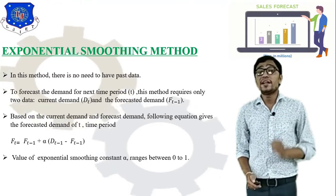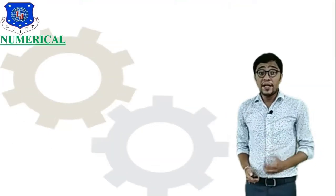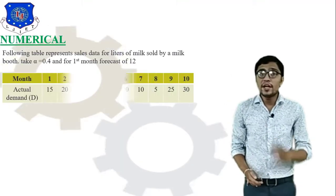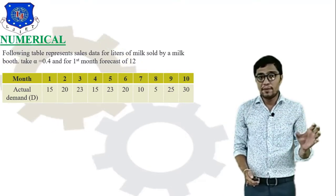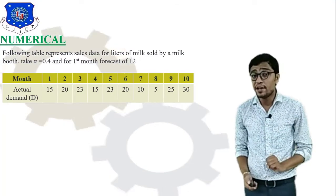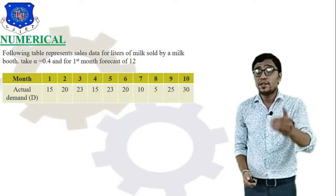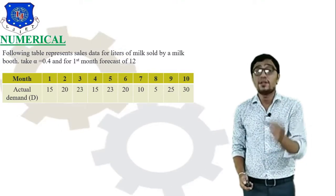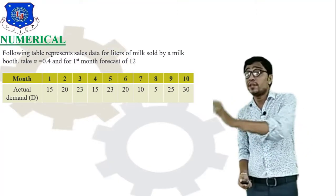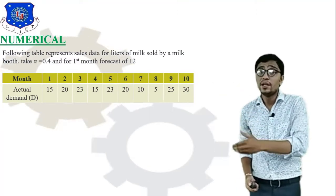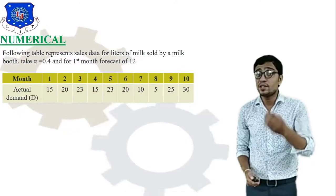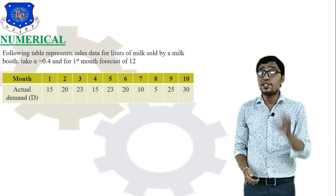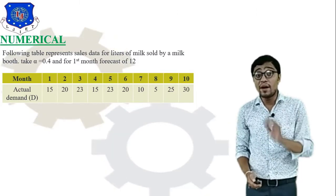Now we will look at a numerical example on the exponential smoothing method. You are given a table with 10 different months and the actual demand for each month. For example, the first month actual demand is 15, the second month is 20, and up to the 10th month the actual demand is 30. You are also given the first month forecast, F1, which is 12. You need to calculate the forecast for each remaining month.